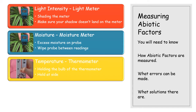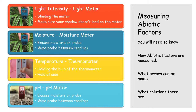A thermometer is used for measuring temperature. One of the key errors we see regularly is holding the bulb of the thermometer — you can see in the picture someone holding the bulb, which will give an incorrect temperature reading. If you hold it by the side away from the bulb, you will get the correct reading.